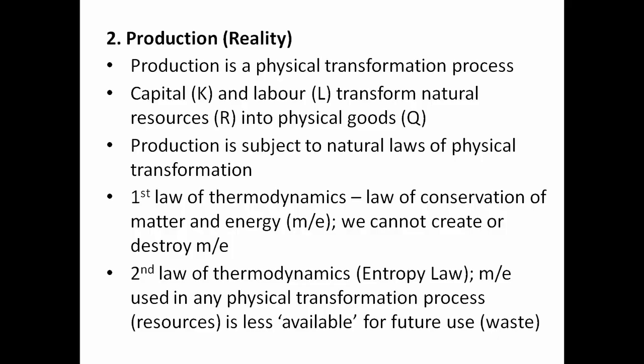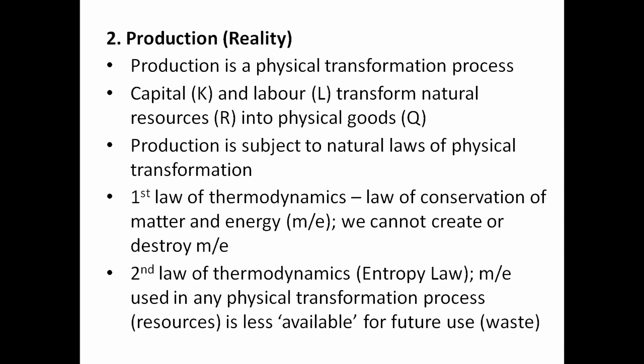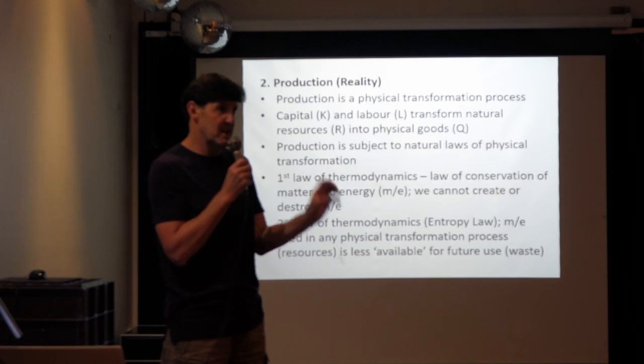Since the production process is a physical transformation process, it's subject to the natural laws of physical transformation — the first and second laws of thermodynamics. The first law is the law of conservation of matter and energy (M-E): we cannot create or destroy matter and energy. The second law is the entropy law: when you use matter and energy in a physical transformation process, its availability for future use is reduced. So useful resources become waste — just as much matter and energy at the end of the process, but in a less usable state.